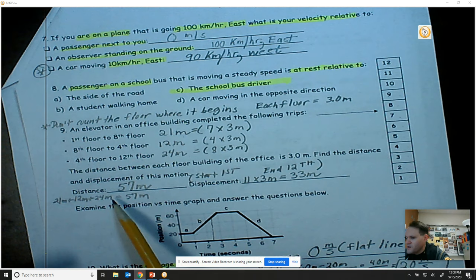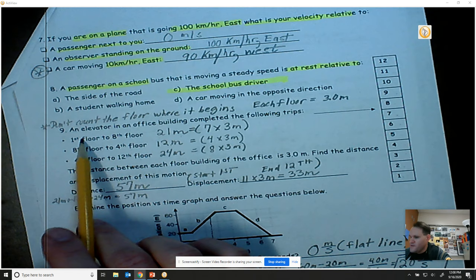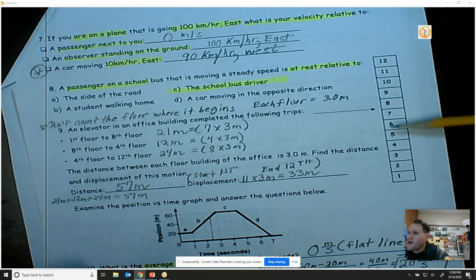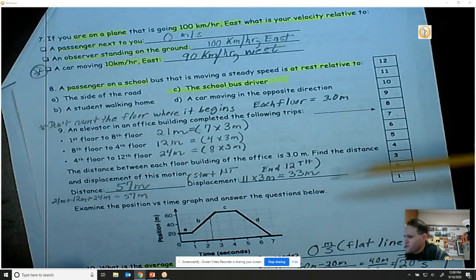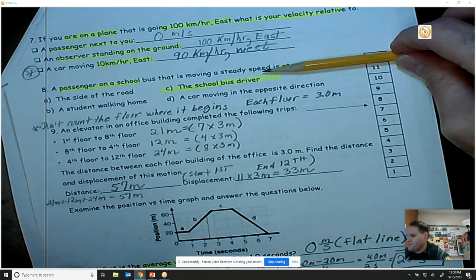Now to displacement. Very simple question. Which floor did the elevator start on? Well, it starts on the first floor. It starts on the first floor, and it ends on the 12th. So how far is it from the first all the way up to the 12th floor? Well, think of it this way. It starts here. 3, 6, 9, 12, 15, 18, 21, 24, 27, 30, and then 33. 33 meters.